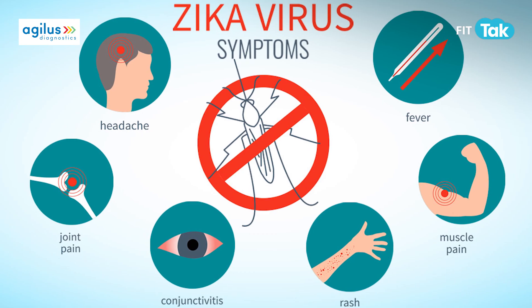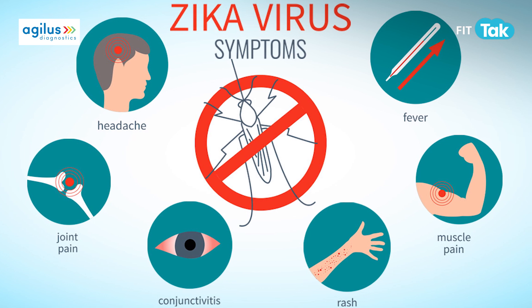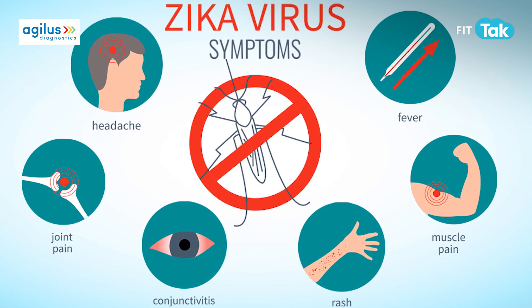The virus spreads primarily through mosquito bites, particularly those of the Aedes species. It can cause mild symptoms like fever, rash, joint pain, and red eyes. But for pregnant women, it's dangerous as it can be transmitted to the fetus, potentially causing birth defects. To talk about this in more detail, we have an expert with us today.